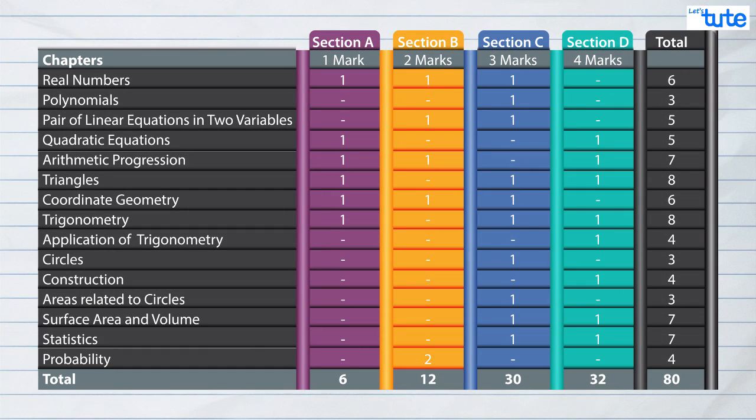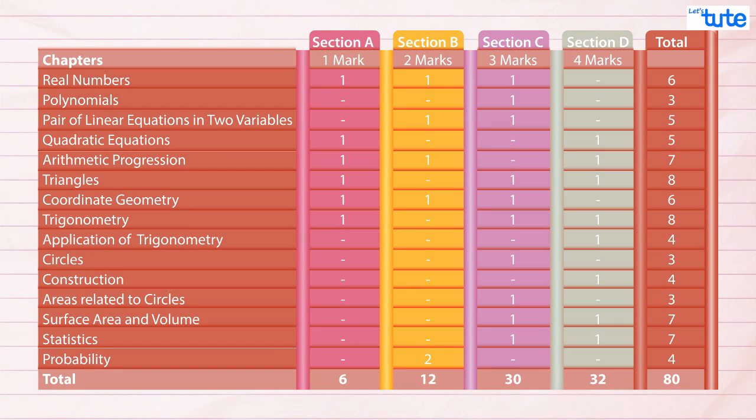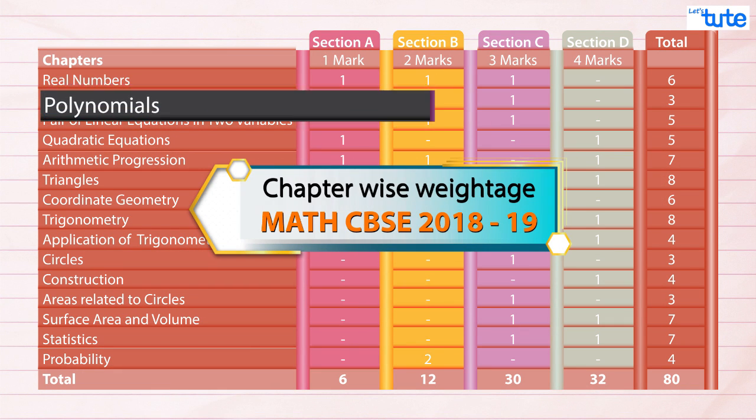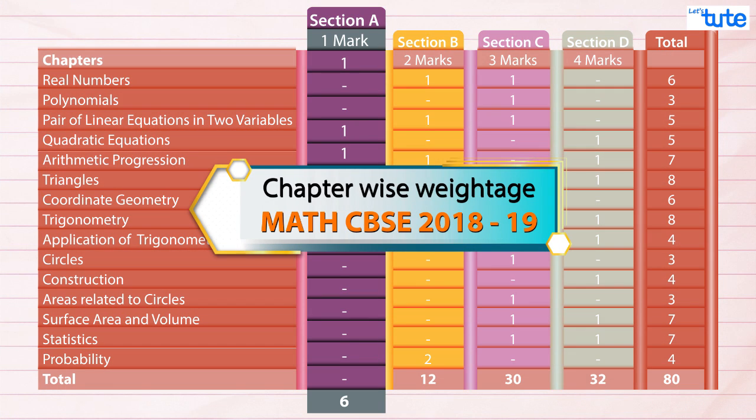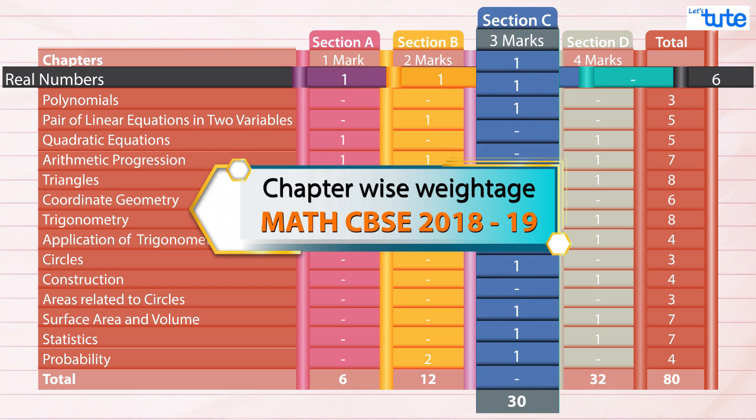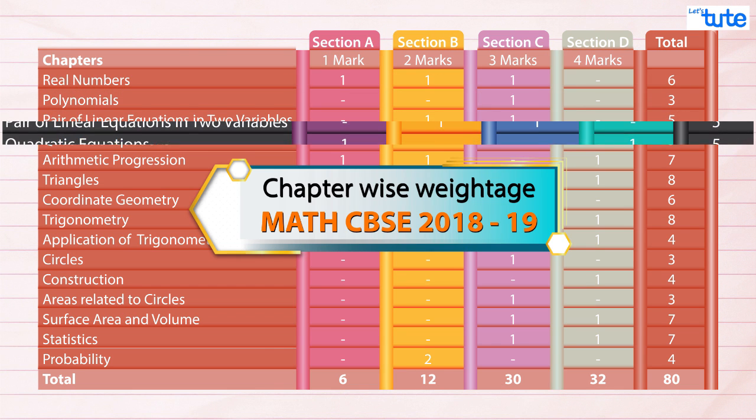Let's form a table which consists of number of questions asked from each chapter and in which section they are asked and the weightage of each question and each chapter.